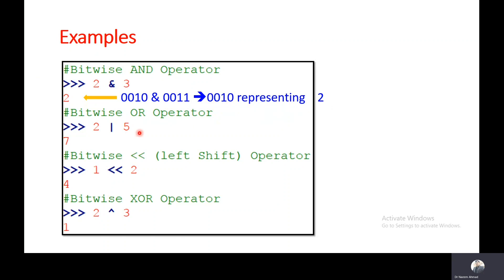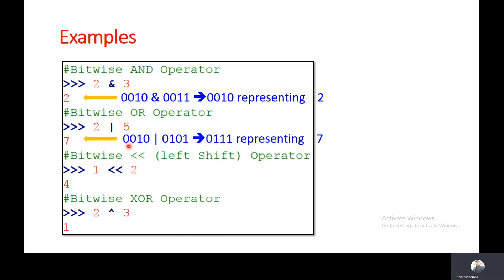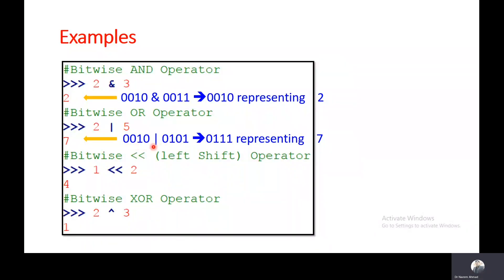In the next example I have taken 2 OR 5 and it is returning 7. First it converts into a bit stream and then performs the operation bit by bit. The bitwise OR operator returns true if any of the bits is 1. The least significant bit of 5 is 1, and likewise it returns 0111, which represents 7.